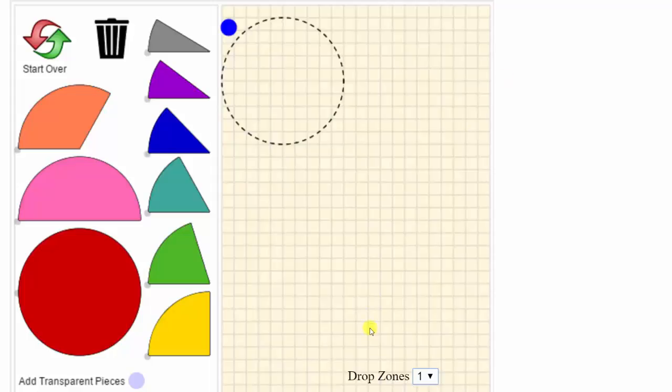The drop zones are located here at the bottom. You can select from one to four drop zones. Let's select two drop zones.